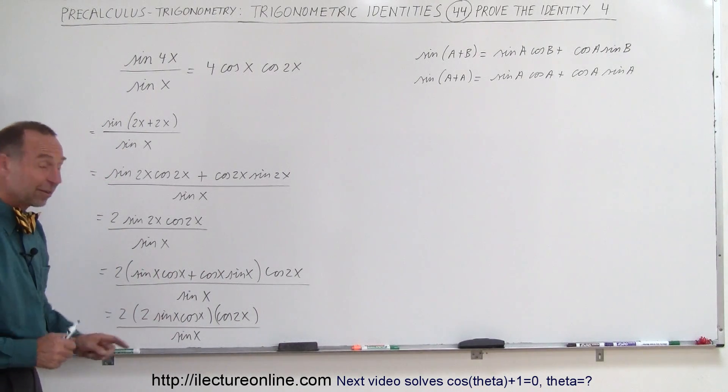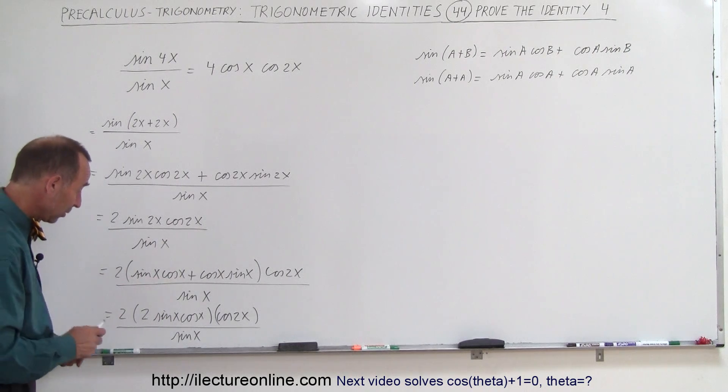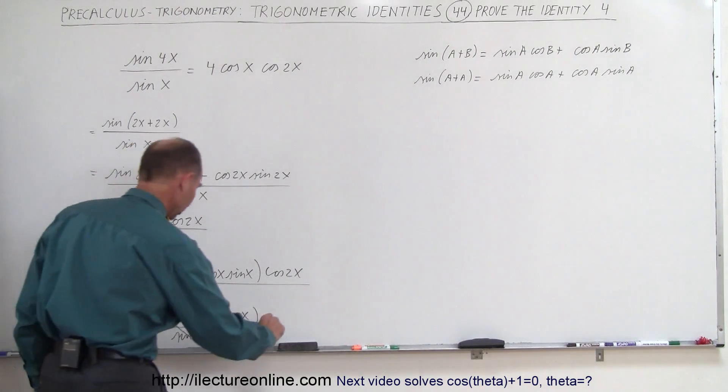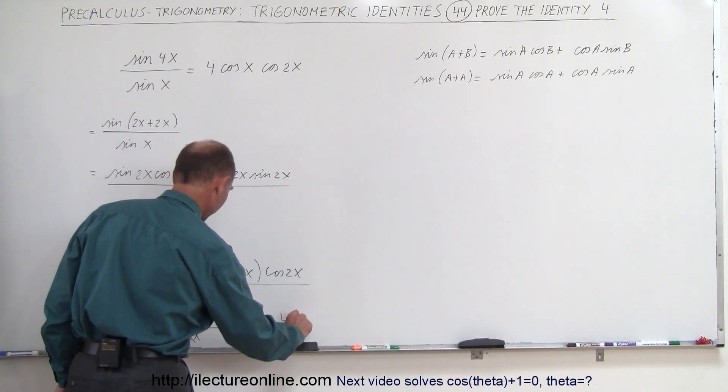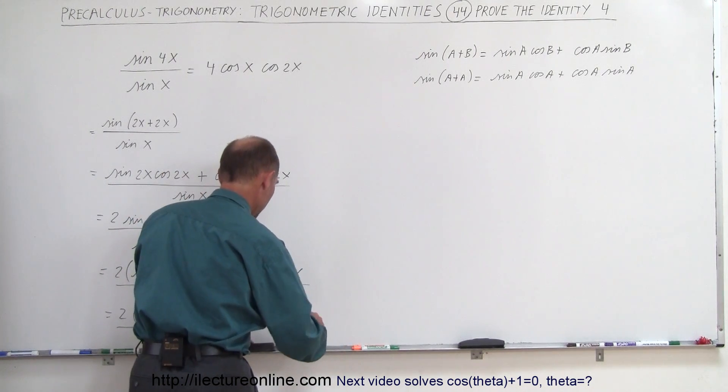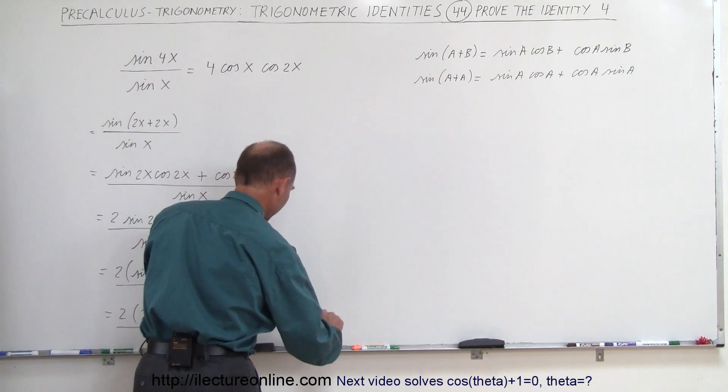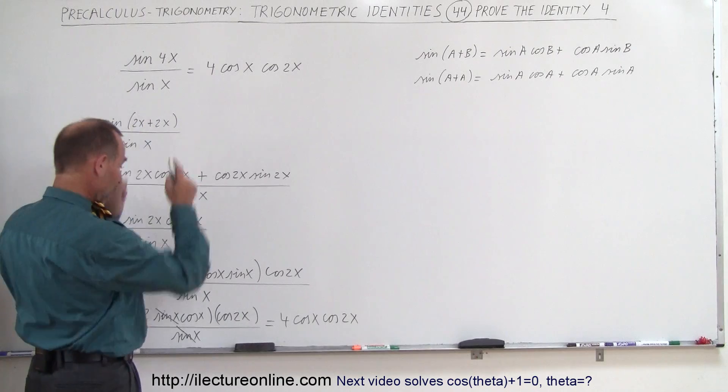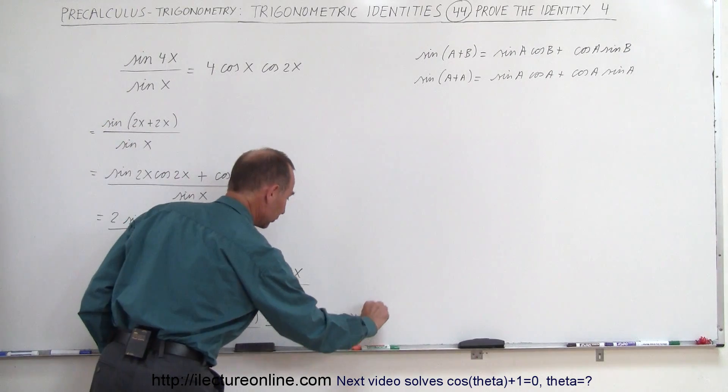And now the sine of x divided by sine of x, since everything is multiplying in the numerator, I can cancel this out with this, and two times two is four, so we can write this as four times the cosine of x times the cosine of 2x. And that is exactly the same as what I have over there, so I proved the identity.